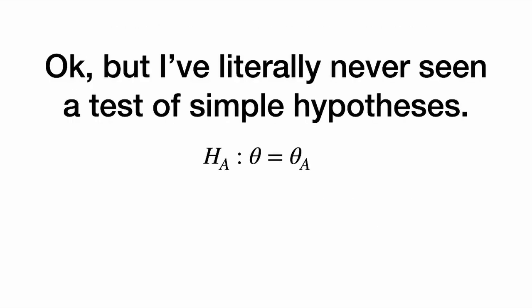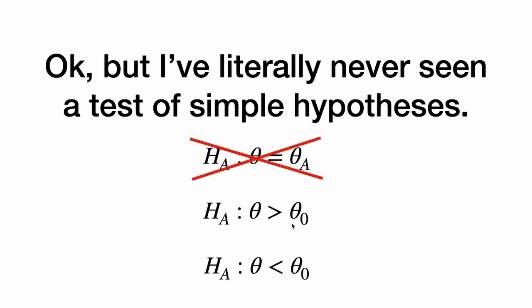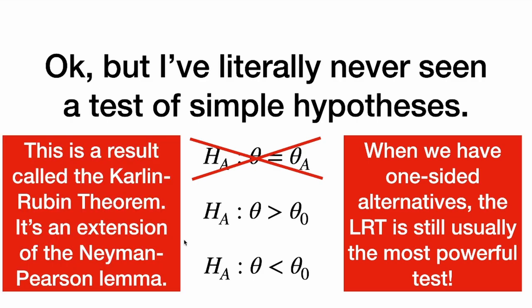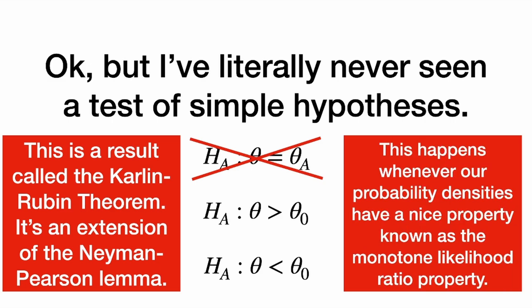You might say you've never seen a test of simple hypotheses — an alternative hypothesis where theta equals some specific number. Usually in intro stats, the alternative is that theta is more than some number, less than some number, or a two-sided test. But when we have these one-sided composite hypotheses, the likelihood ratio test is still usually the most powerful. This is a result called the Karlin-Rubin theorem, an extension of the Neyman-Pearson lemma. Whenever our probability densities have the monotone likelihood ratio property — which many common distributions have — then likelihood ratio tests are still the most powerful for one-directional composite hypotheses.